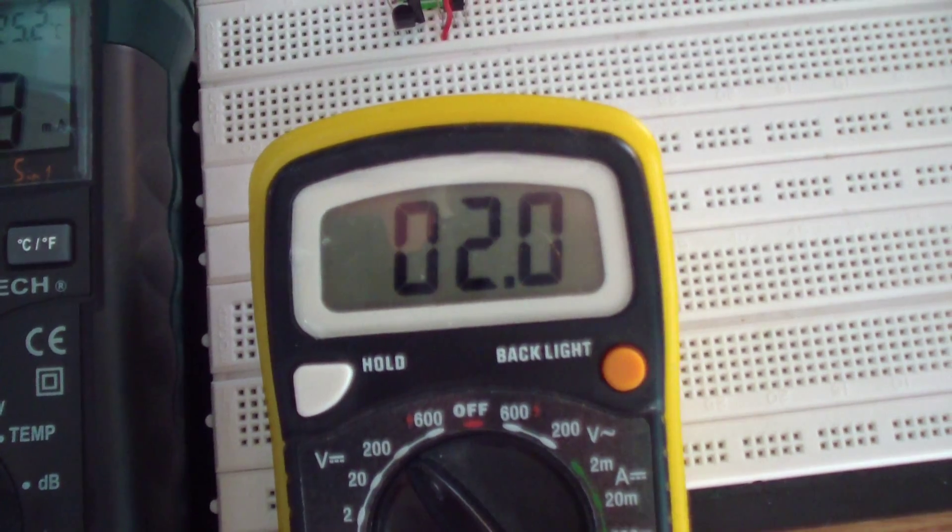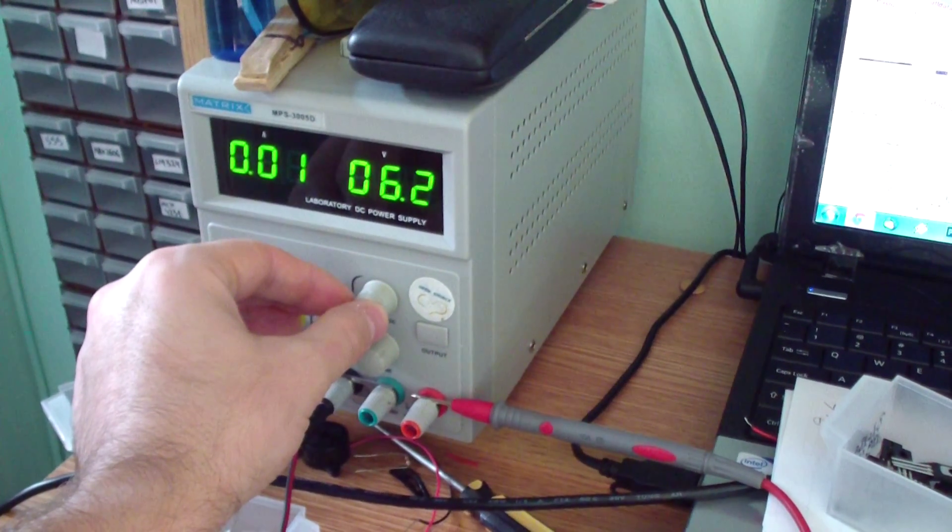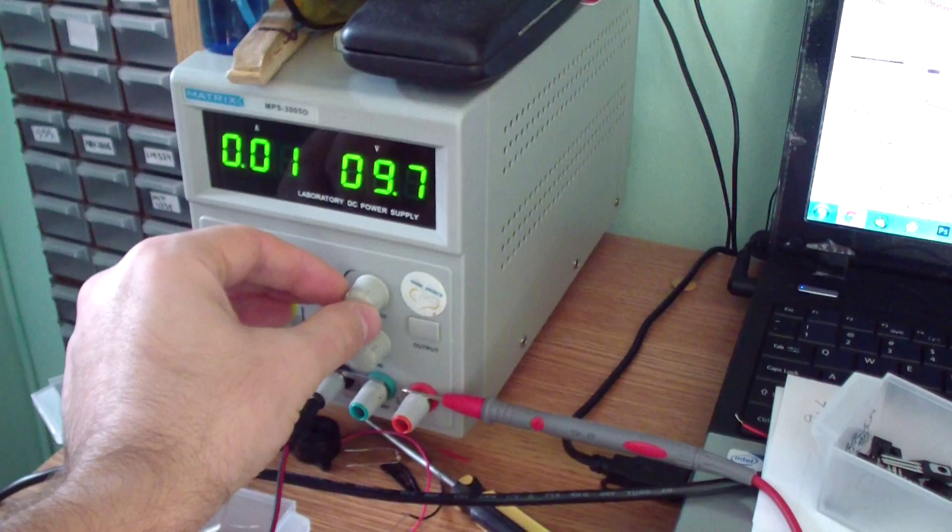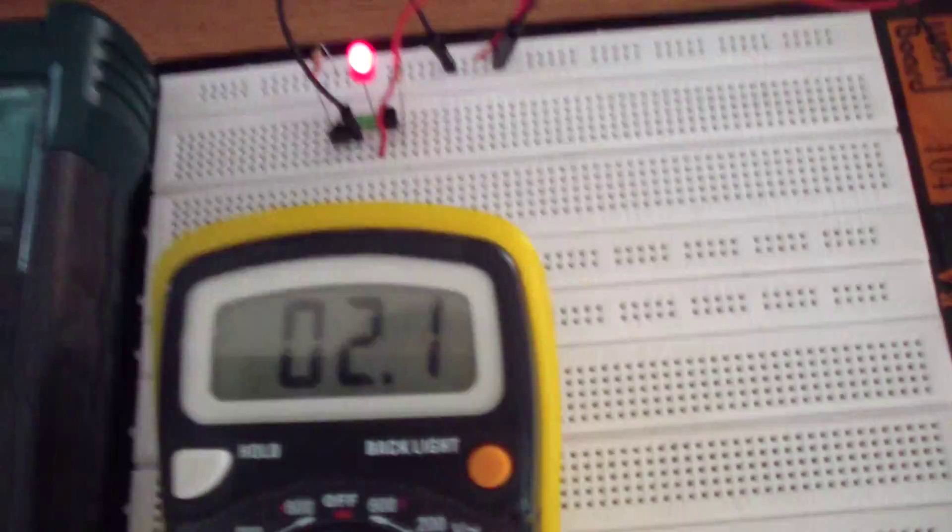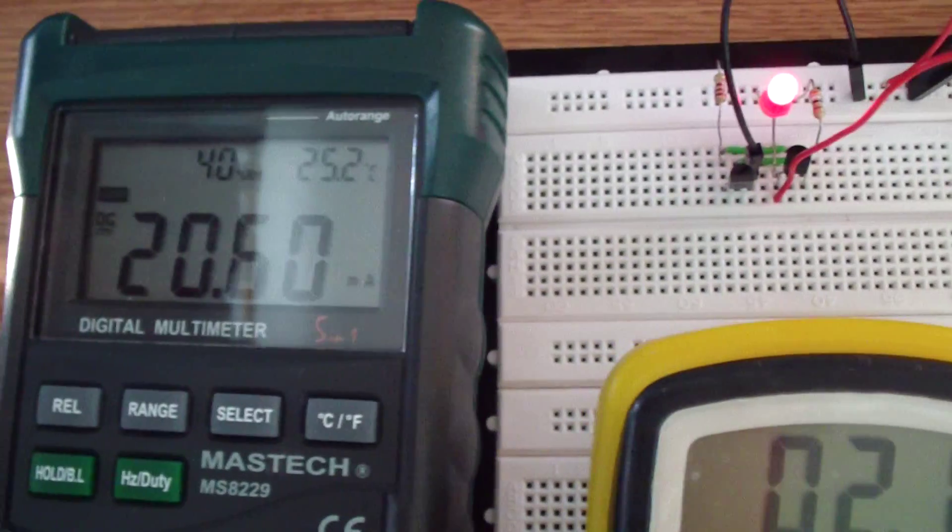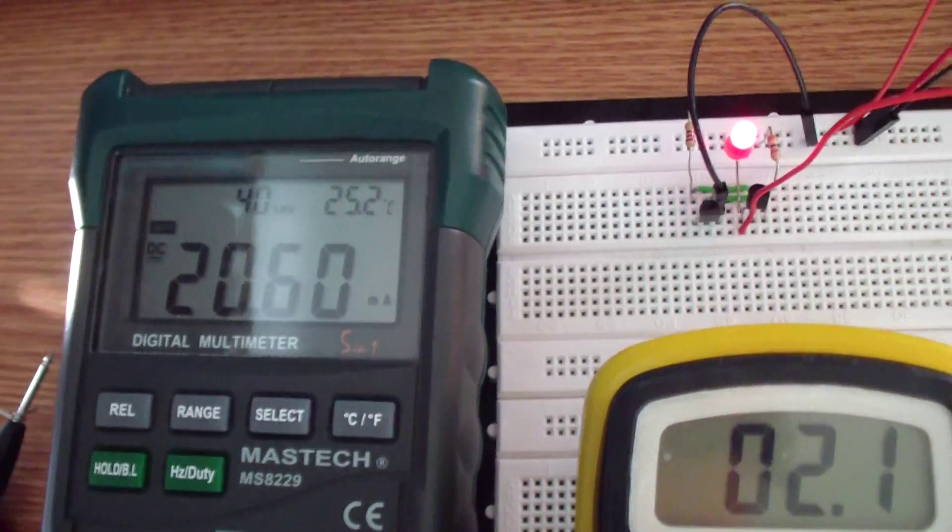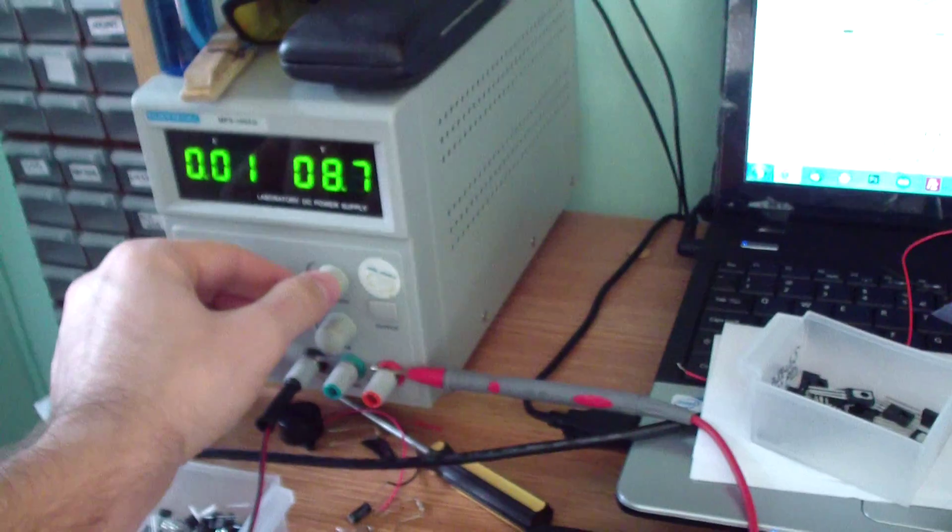Now I increase the voltage to, for example, 9 volts. The voltage on the LED is 2.1 volts, the current consumption of the whole circuit is 20 milliamps. Now I'll go further with the voltage.